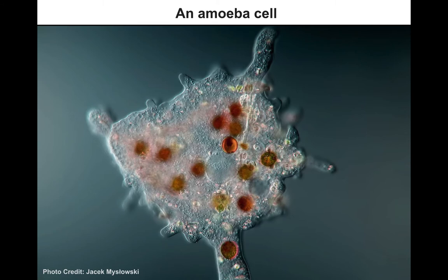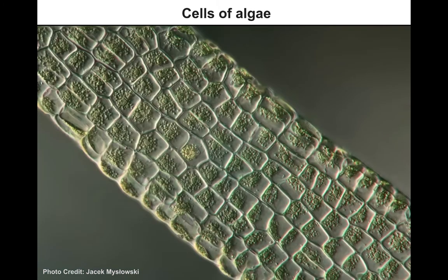Cells are much bigger than molecules. Cells are made of molecules. Cells are alive, and cells are something you can see in a microscope. This is an amoeba cell — you can see its nucleus and pseudopods, which are like false feet projections. Here's another example: algae cells. These are rectangular and very rigid because they're surrounded by a cell wall. Inside those cells we can see little green circles — those are the chloroplasts, which create the photosynthesis of plants.